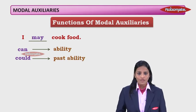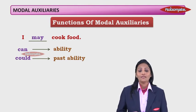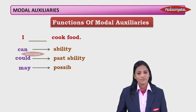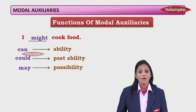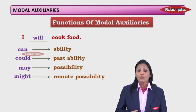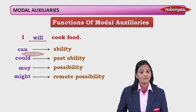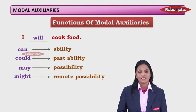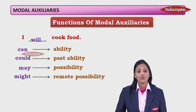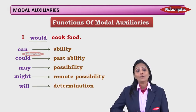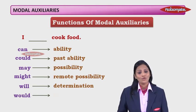'I may cook food' shows possibility — it may be possible for me to do it. 'I might cook food' shows a remote possibility, something far away you're not very sure of. 'I shall cook food' is simply a future tense. 'I will cook food' with 'will' used with 'I' shows determination. 'I would cook food' means at a particular time in the past I would continuously do this action — past habitual action.